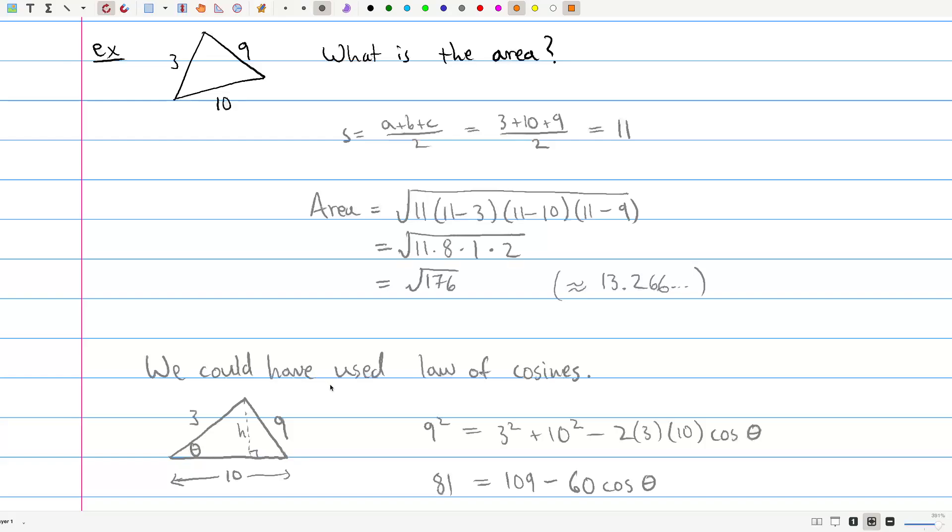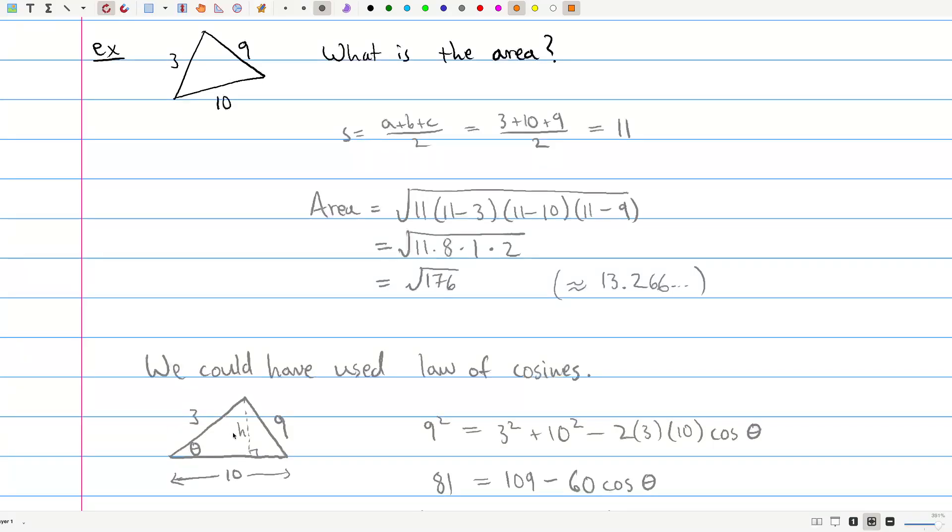So here's how we could have used the law of cosines. We've got our triangle. Let's set up an altitude because, remember, it's 1 half base times height. So, let's say 10 is our base, H is our height, and we want to know, in this case, we're going to try to find this theta because once we know theta, we can use the formula 1 half 3 times 10 times sine of theta, and that'll give us the area. And we can find this theta by using the law of cosines.